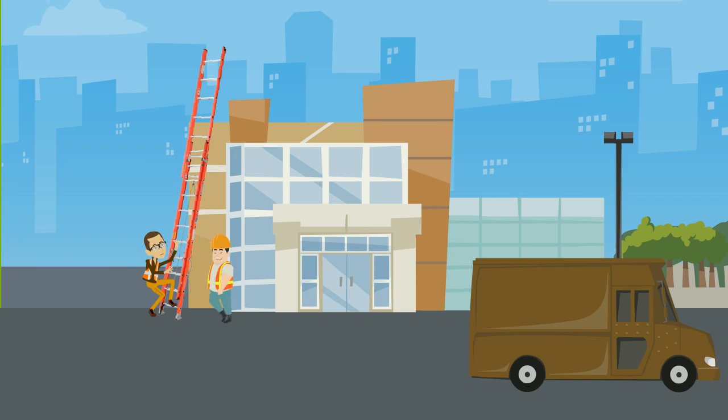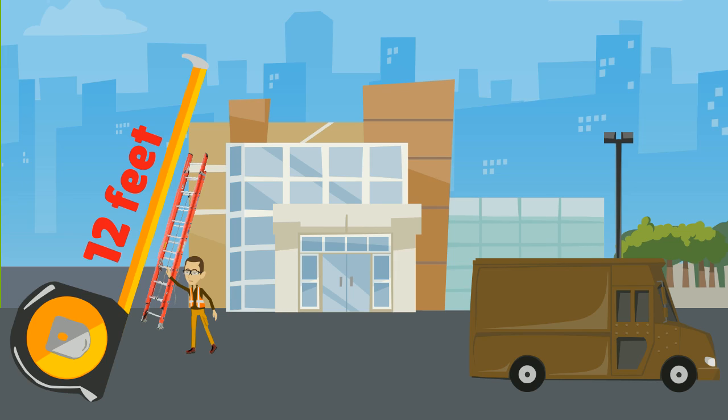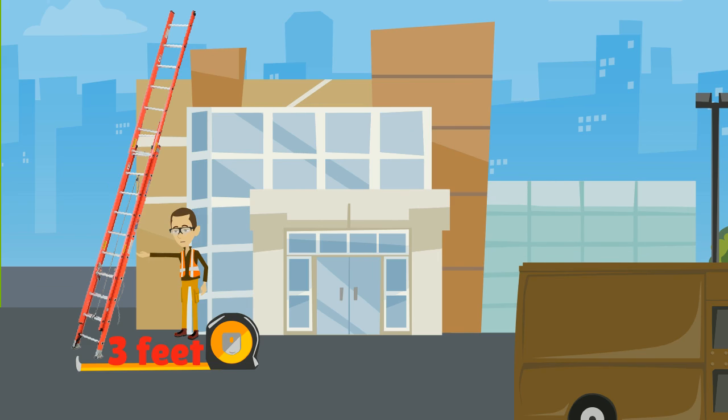Secure the bottom of the ladder or have someone hold it while you climb. Angle the ladder properly by using the 4 to 1 rule. The bottom of the ladder should be 1 foot away from the wall for every 4 feet the ladder rises. For example, if the ladder touches the wall 12 feet above the ground, the feet of the ladder should be 3 feet from where the ladder touches the roof.